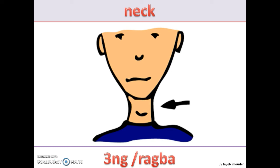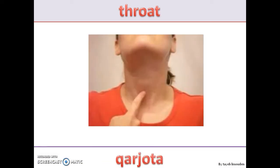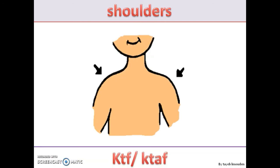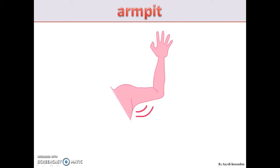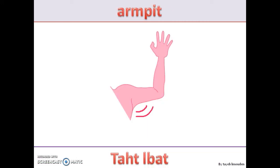رقبة — neck. قرجوطة — nape of the neck. كتف — shoulder. تحت البات — armpit.